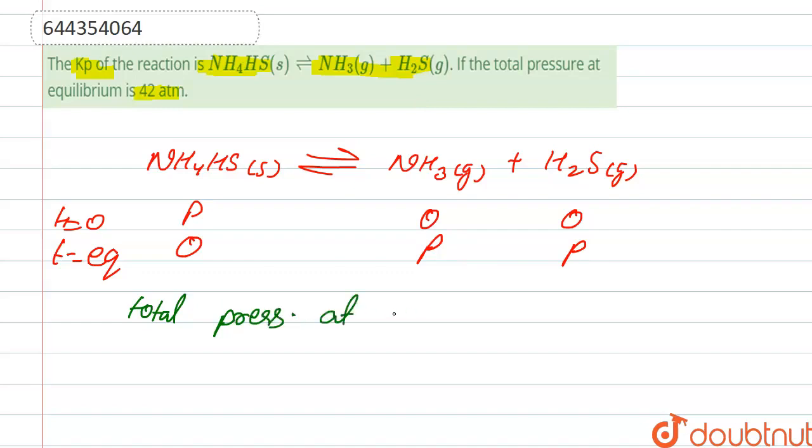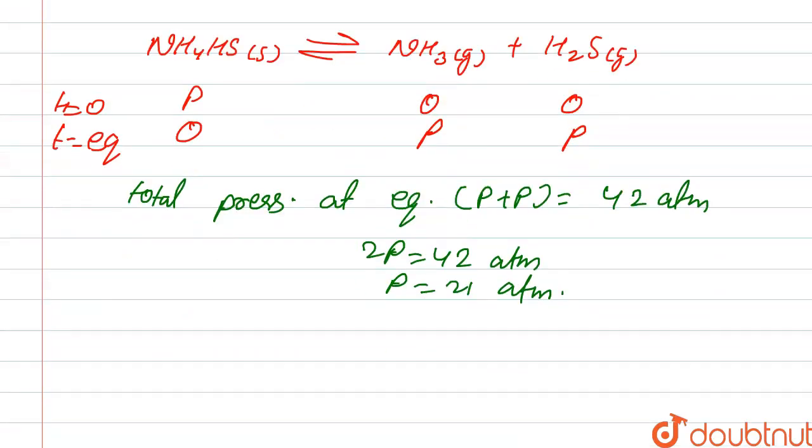pressure at equilibrium. If we add P plus P is equal to given, that is 42 atm, right? So here 2P is equal to 42 atm. So P is equal to 21 atm. Right, so we have to calculate the